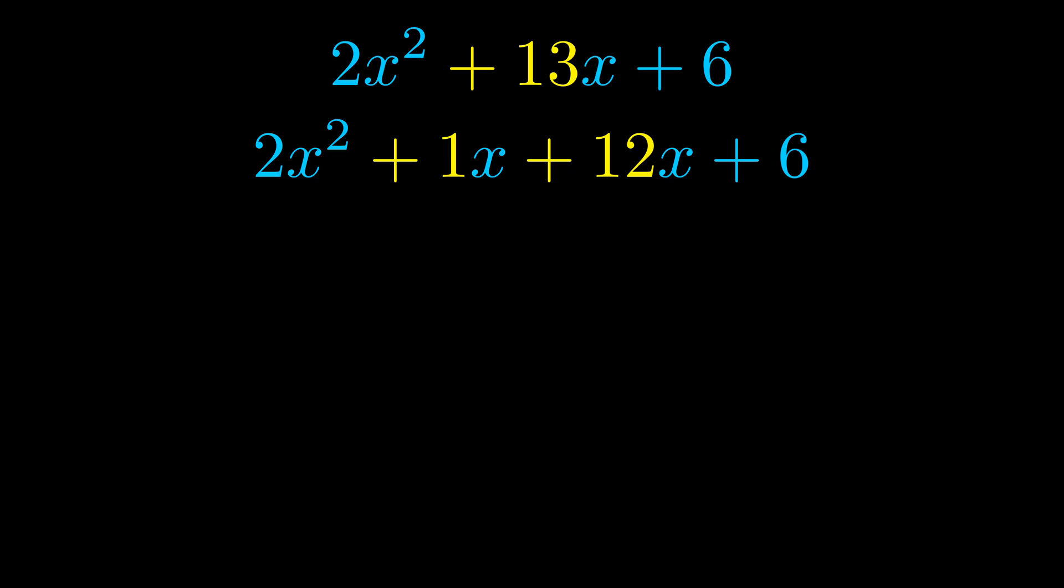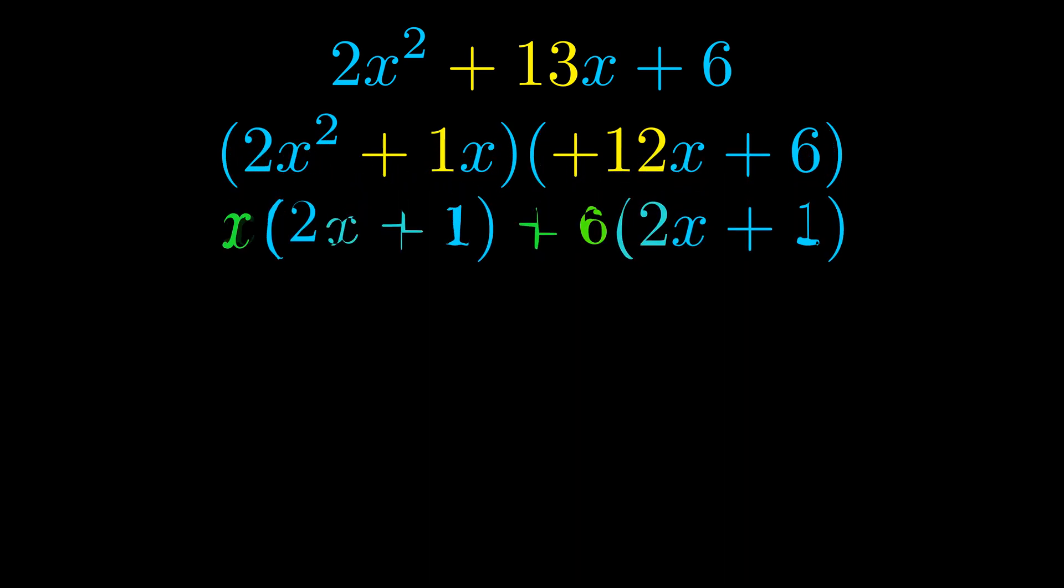Once we've done this, we put parentheses around the first term and the last term, so that we can take the greatest common factor out of both terms. We can see the greatest common factor is now outside in green. Notice also how what remains inside the parentheses is the same in both cases.